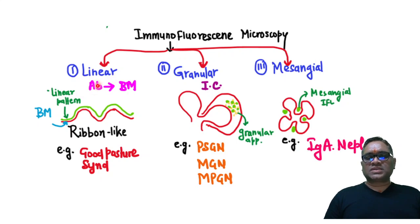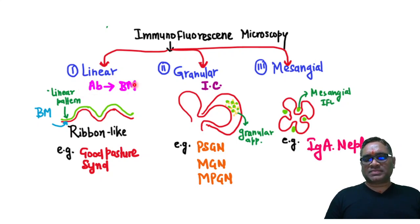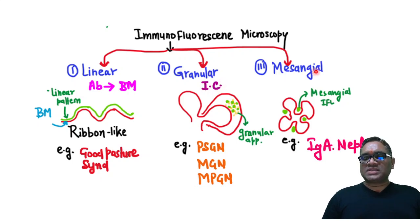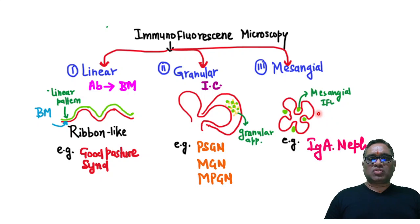Linear pattern is suggestive of antibodies when they are causing damage to the basement membrane. Granular is because of immune complex mediated damage of the kidney, and mesangial will be mesangial deposition of the immunoglobulin.